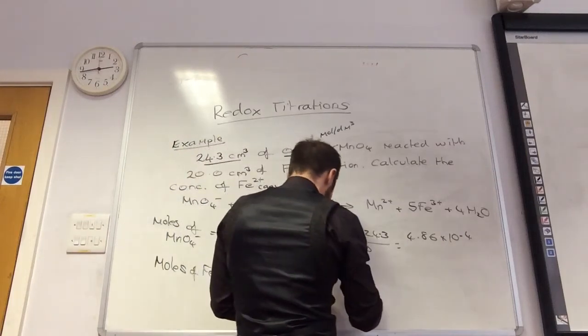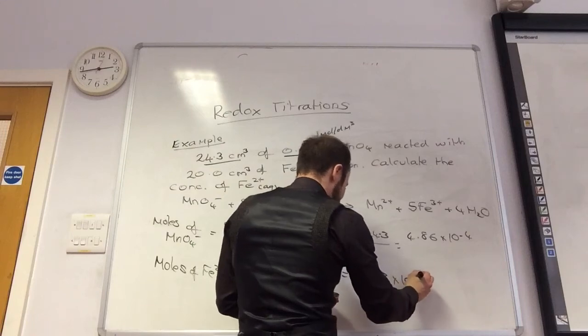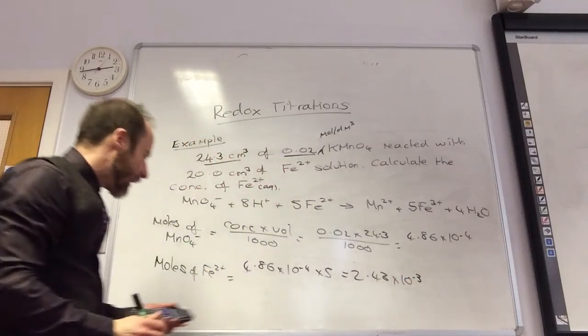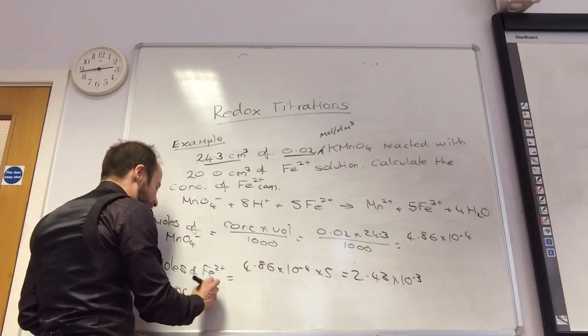4.86 times 5. That equals 2.43 times 10 to the minus 3. And then, final, how do I work out my concentration of Fe2 plus?